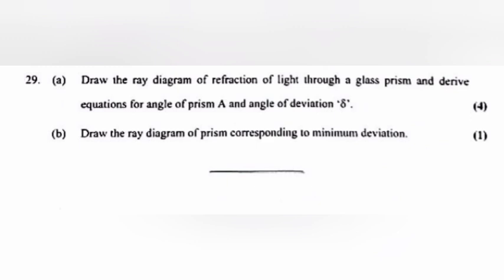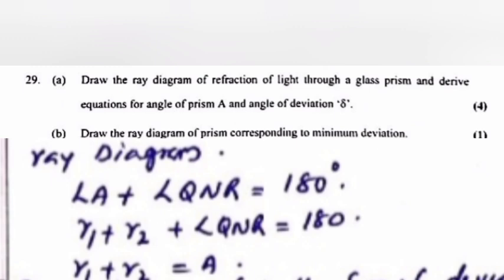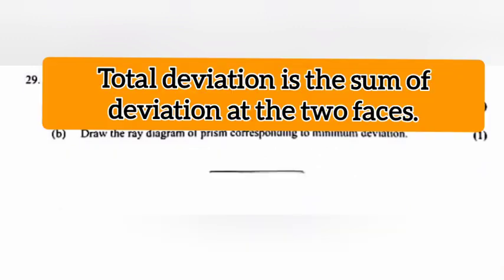Question 29: Draw the ray diagram of refraction of light through a glass prism and derive the equation for the angle of prism A and angle of deviation. Answer: Angle A + angle QNR = 180°. r1 + r2 = A. Total deviation is the sum of deviations at the two surfaces.